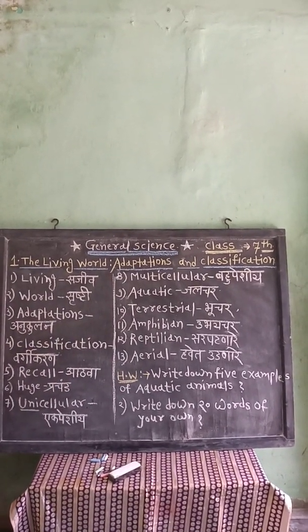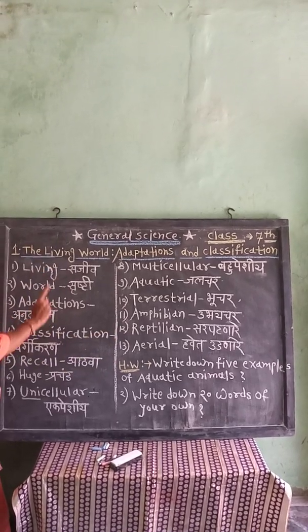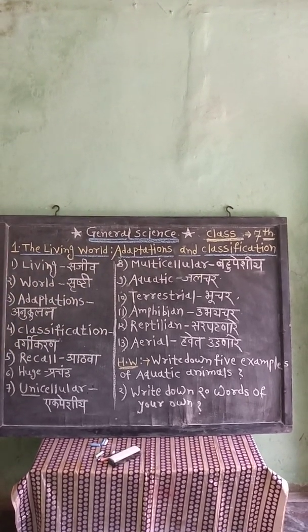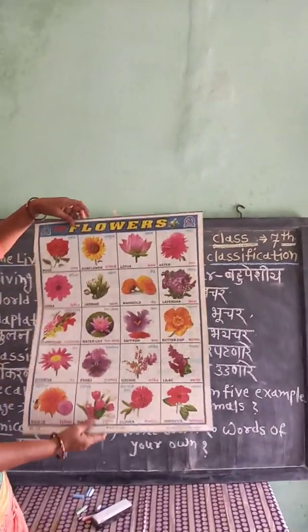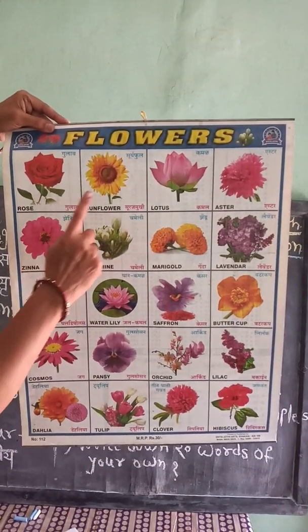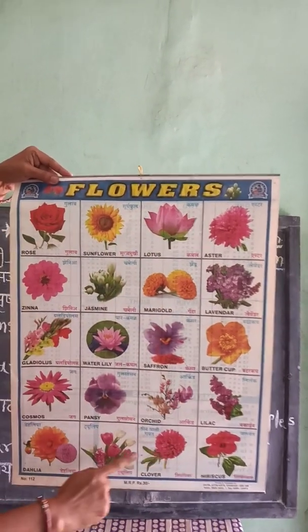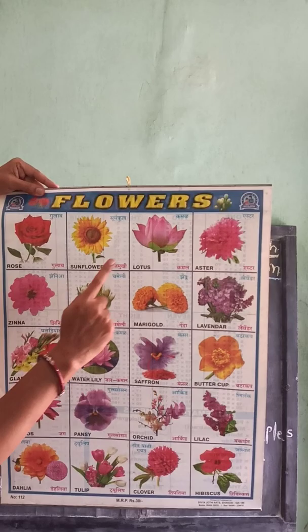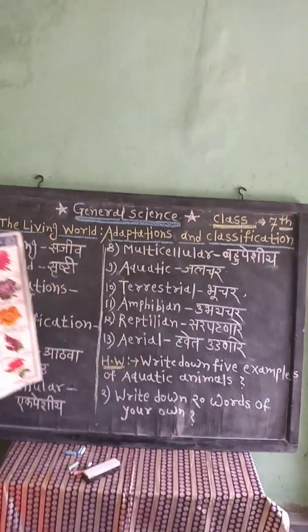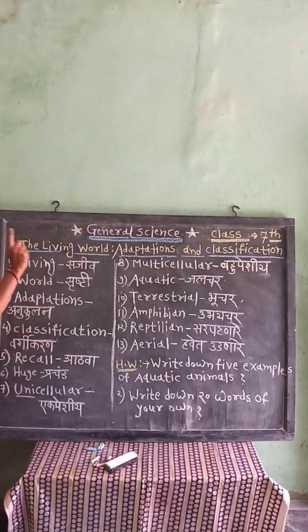Diversity in Plants: A great variety of plants is found on the earth. Some plants have colorful flowers. Look at this chart — some are flowering plants and some are non-flowering plants. Different types of flowers include rose, sunflower, lotus, and aster.